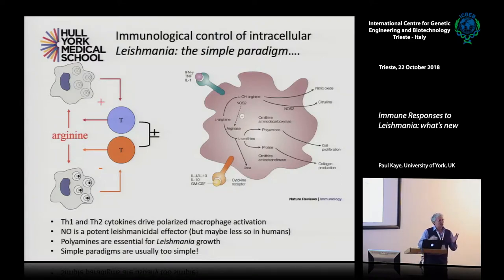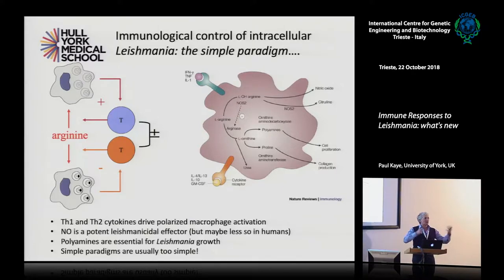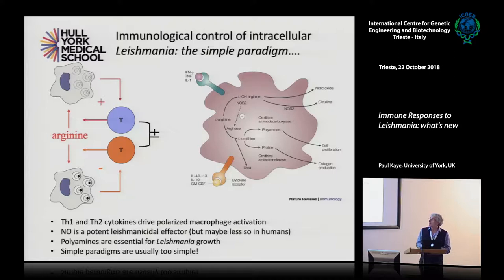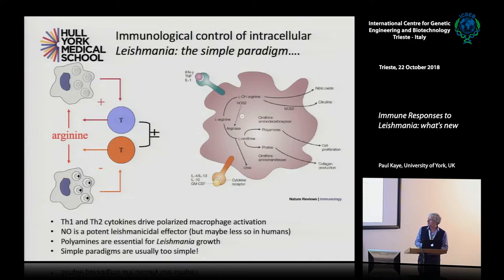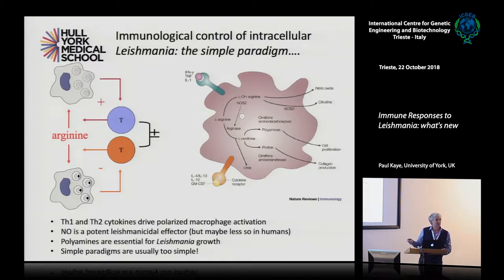This is the extension of the dogma of TH1-based immunity versus TH2-based immunity — two different types of T cells driving the host cell in different directions: TH1 kills the parasite, while TH2 allows a favorable environment for parasite survival. This paradigm evolved since the late 1990s as cytokine biology and our understanding of T cell subsets expanded. But simple paradigms are usually too simple to explain the whole pathogenesis of leishmaniasis.